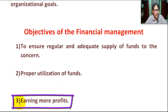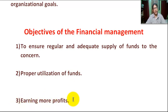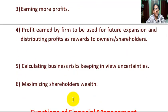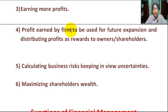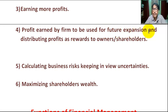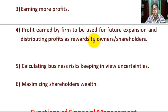Number three: earning more profit. Number four: profit earned by firm investment of investor. Number five: capital investment of fund to be used for future expansion of the company, and distributing profit as rewards to owners and also shareholders.